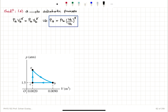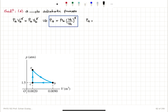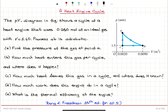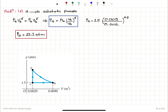If we plug in the numbers: pressure at point A equals 1.5 atm — that's the pressure at point B — times (VB over VA) to the power 1.4. Volume at point B is 0.009 cubic meters and volume at point A is 0.002 cubic meters. So we have (0.009 / 0.002) to the power 1.4. Therefore, pressure at point A is 12.3 atmospheres. Because the original pressure was given in atmospheric units, this result is also in atmospheric units.